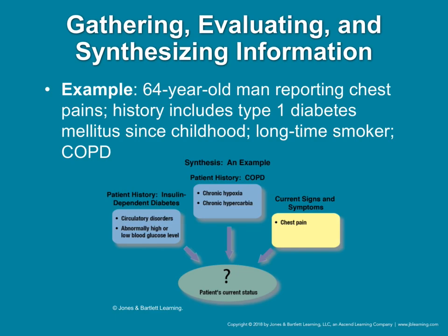Here's an example from the textbook: a 64-year-old male reporting chest pains with a history of type 1 diabetes since he was a kid and a longtime smoker. When you have type 1 diabetes for a long period of time, you develop neuropathy and don't feel pain to the same extent as the average person — so the fact that this person is complaining of chest pain could be pretty significant. Type 1 diabetics also have vascular disease and poor circulation. Those are comorbidities — when the patient has two or more chronic diseases or conditions. Comorbidities like diabetes are directly related to circulatory complications.